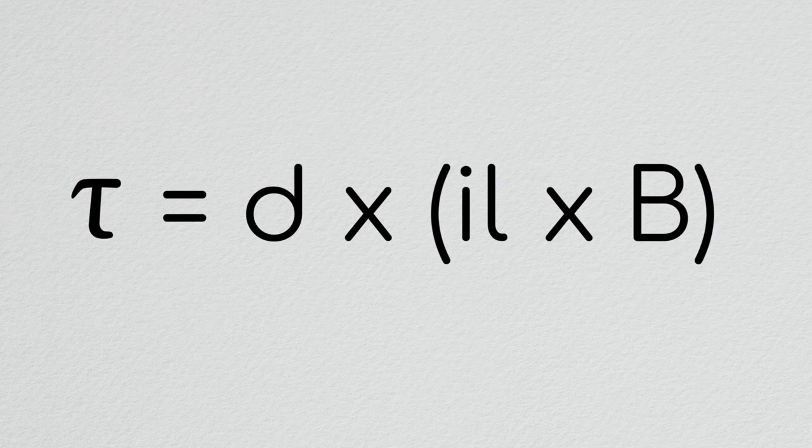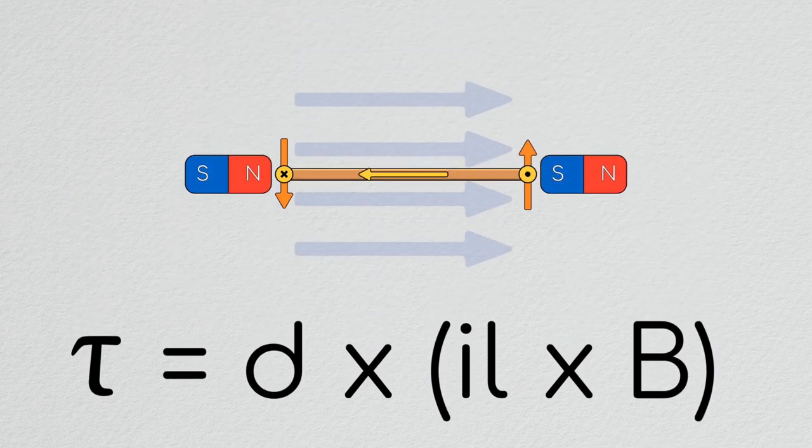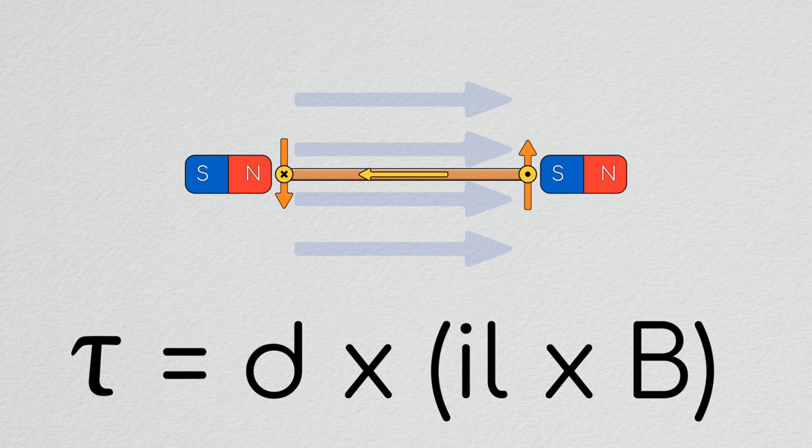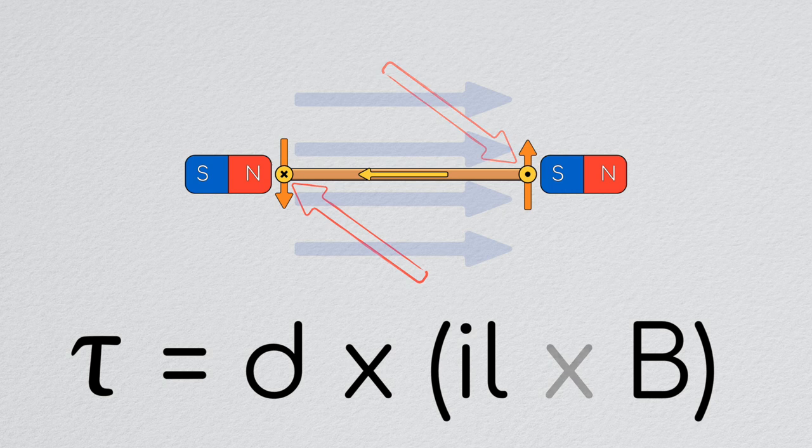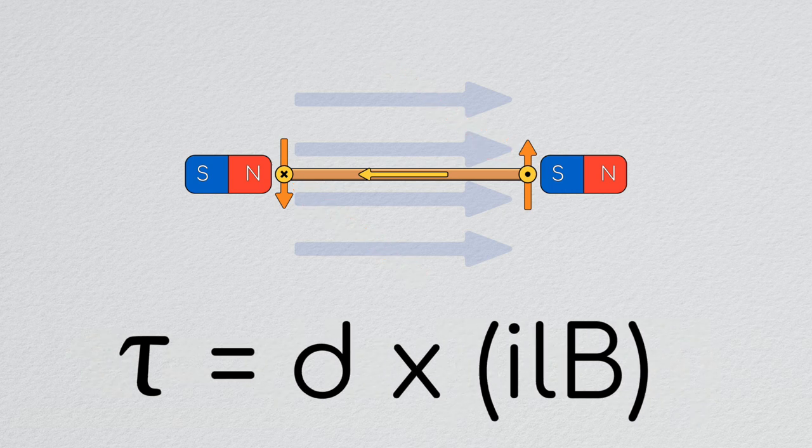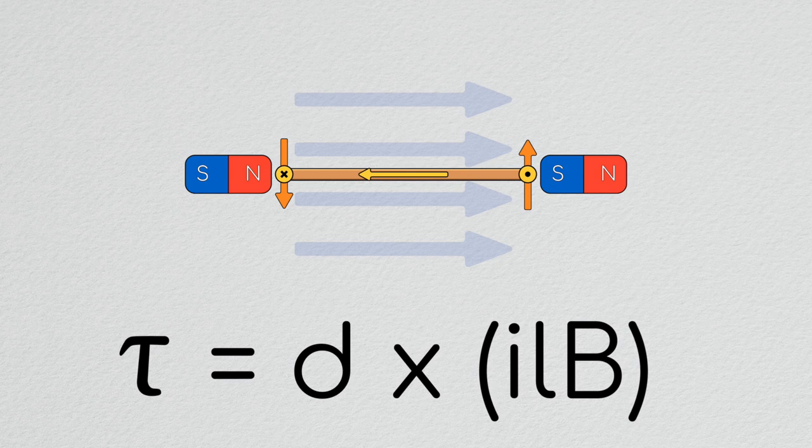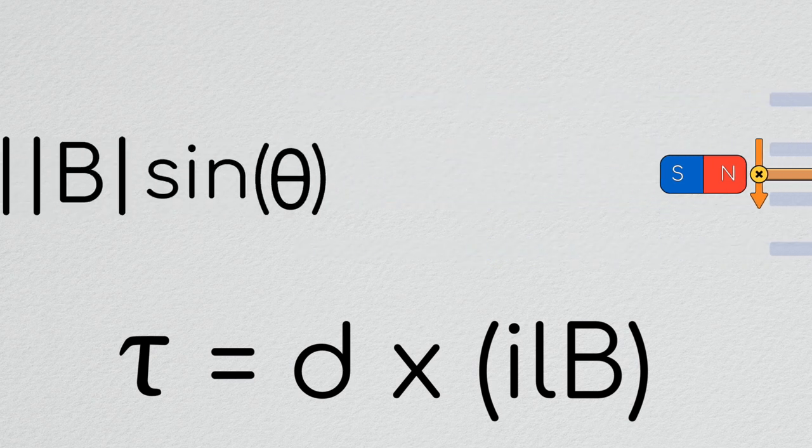I know that all these cross products can make this a little less intuitive, so let's make some simplifying assumptions. If we assume the magnetic field and direction of current are perpendicular as shown here, we can reduce this cross product of IL and B to simple multiplication, where the resulting force will point up and down.